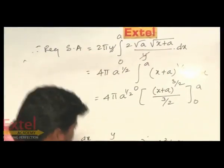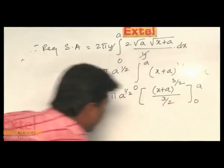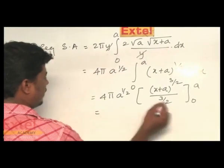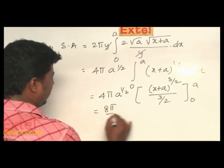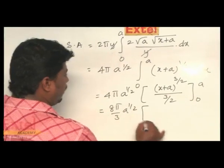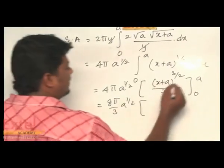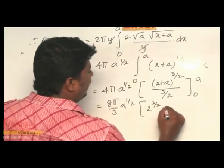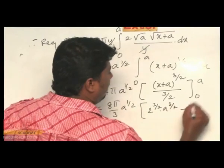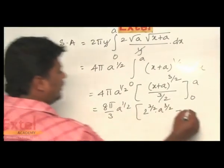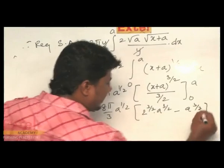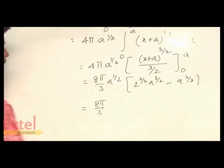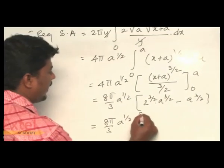Simplifying: 3/2 in the denominator becomes 2/3, so this becomes 8π/3 times a^(1/2). Substituting x equals a: we get (a plus a)^(3/2) equals (2a)^(3/2) equals 2^(3/2) times a^(3/2). Substituting x equals 0: we get simply a^(3/2). Taking a^(3/2) common outside: 8π/3 times a^(1/2) times a^(3/2) into (2^(3/2) minus 1).